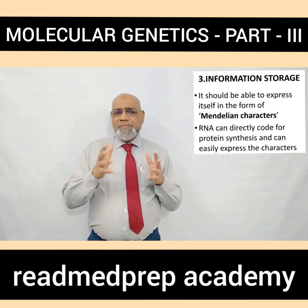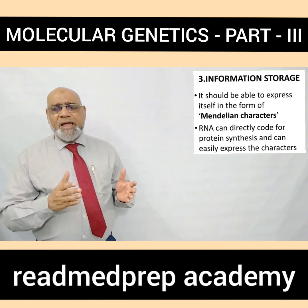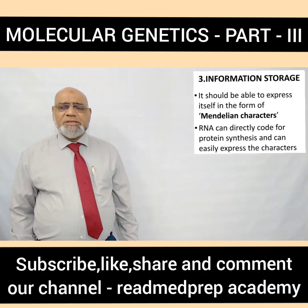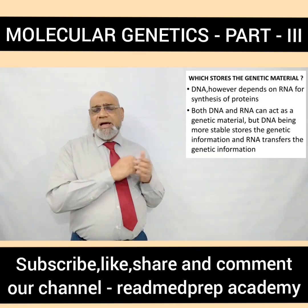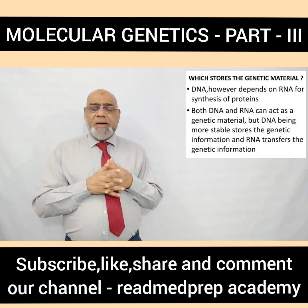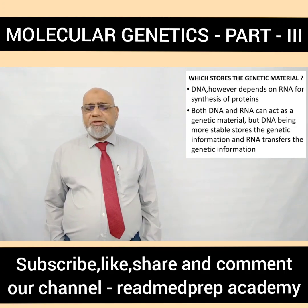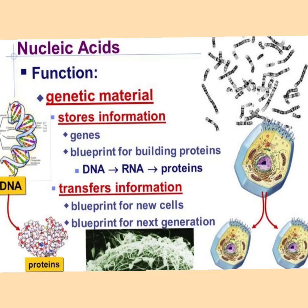The genetic material should have the ability of information storage. It should be able to express itself in the form of Mendelian characters. RNA can directly code for protein synthesis and can easily express the characters. DNA depends on RNA for the synthesis of proteins. Both DNA and RNA can act as genetic material, but DNA, being more stable, stores the genetic information, whereas RNA transfers the genetic information. DNA stores information in the form of genes, provides a blueprint for building proteins, and is transcribed into RNA which is then translated into proteins.